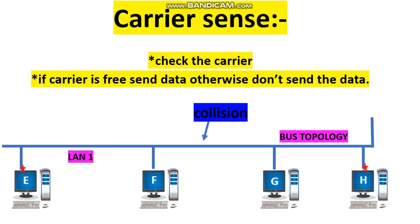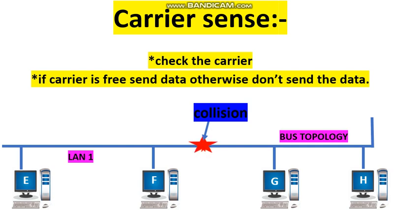At the same time — 4 o'clock — station H also senses the carrier, finds it free, and tries to send data to station F. So now data is going from E to G and from H to F simultaneously. After some time, a collision occurs and the data bits are corrupted, making the data useless.